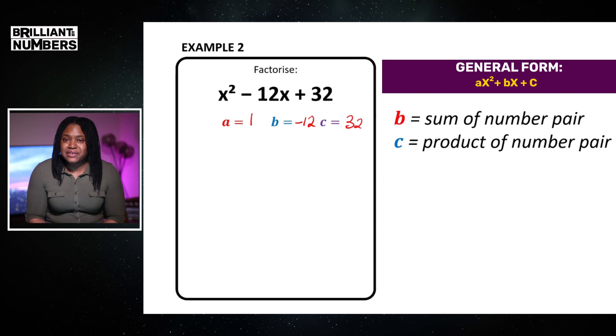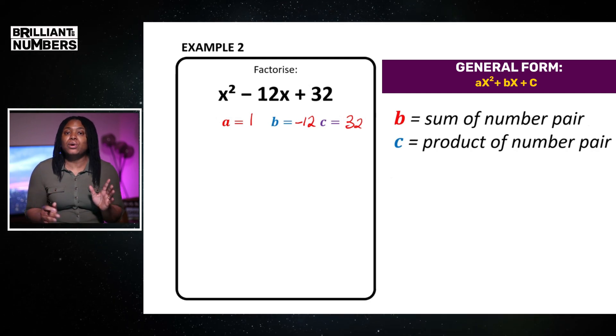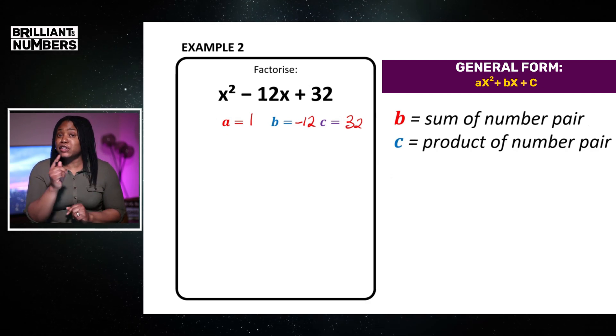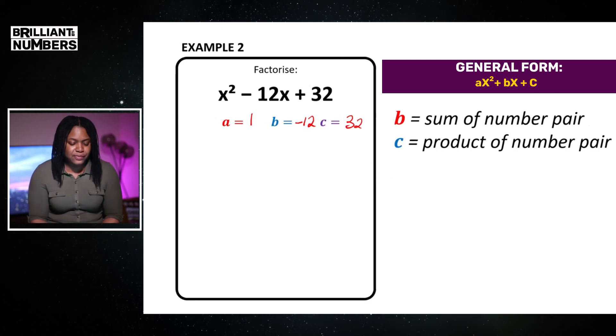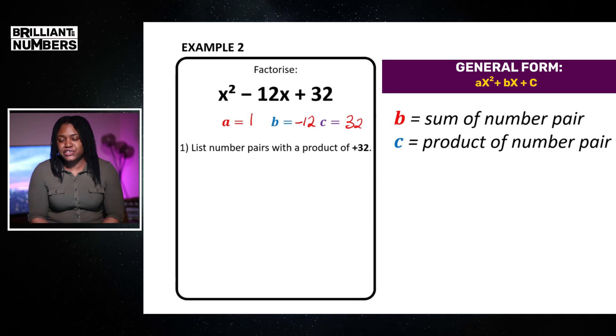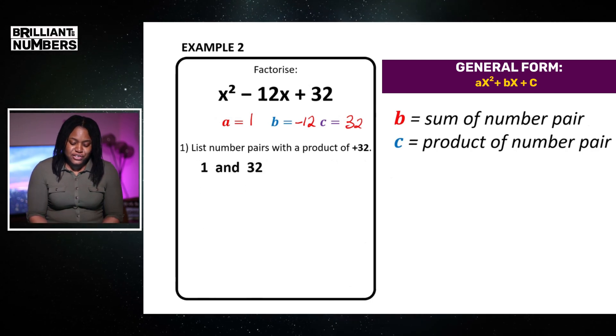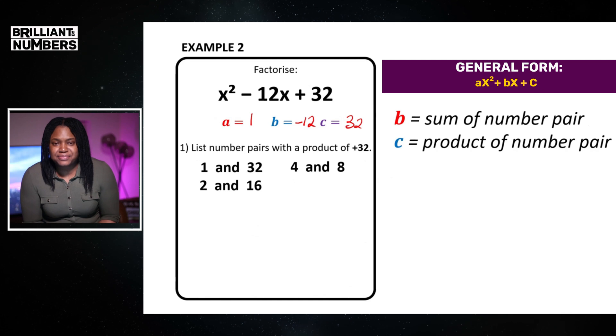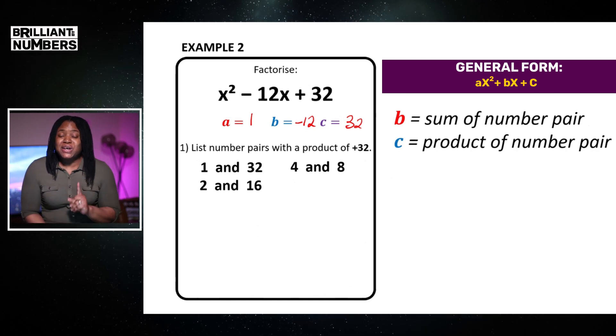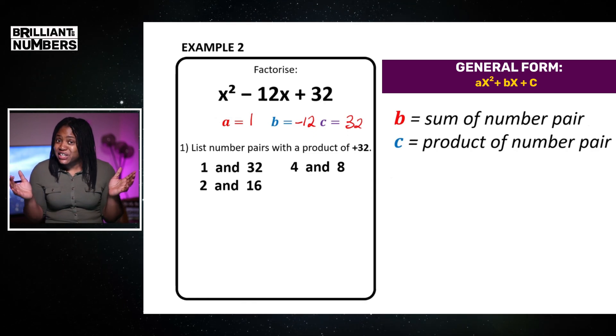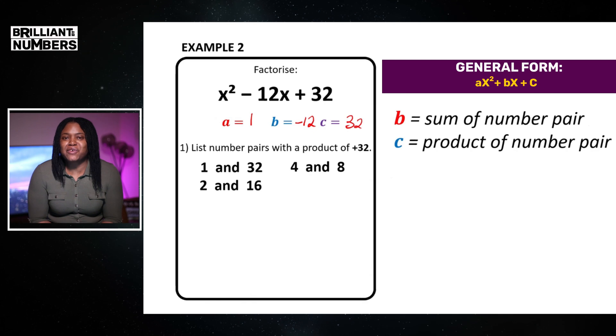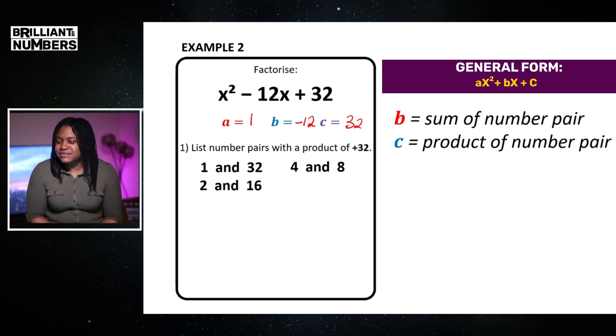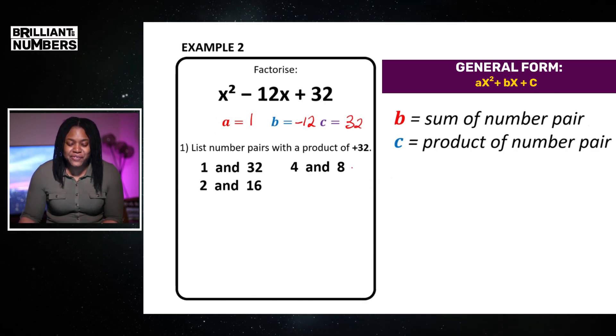So, I am going to list the factors of 32. So, remember, we list them all and then we look at the criteria because we want the sum of these numbers to be minus 12. So, listing the positive factors of 32. So, I have got 1 and 32, 2 and 16, 4 and 8. Now, we want them to add to minus 12. Indication here, there has to be negative terms involved. Now, which two of our factors added together give positive 12? Yes, the answer is 4 and 8.